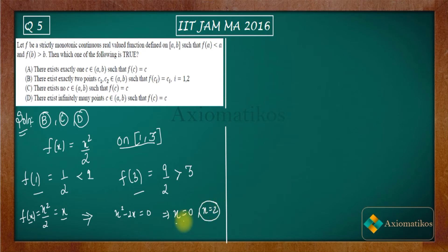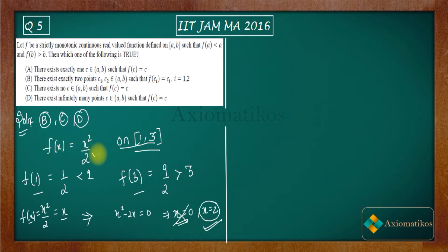x = 0 is not valid since we are working on [1, 3], so we get only one fixed point: x = 2. This shows that options B, C, and D are incorrect using this counter example. However, option A is also incorrect, and I will show that with a graph.